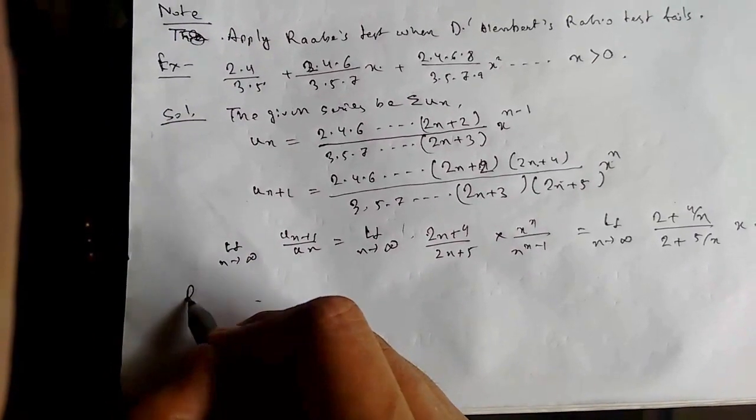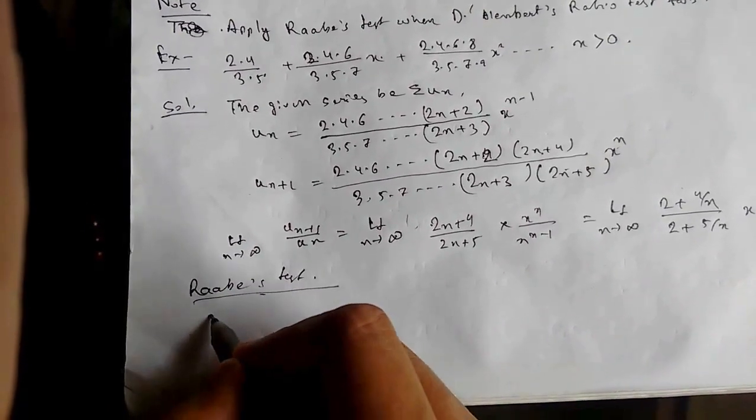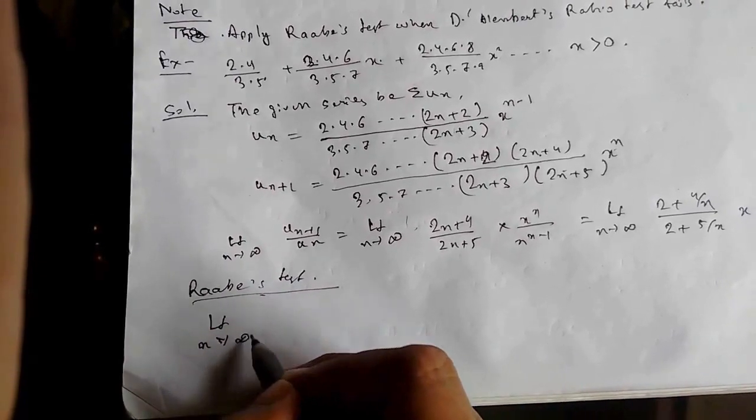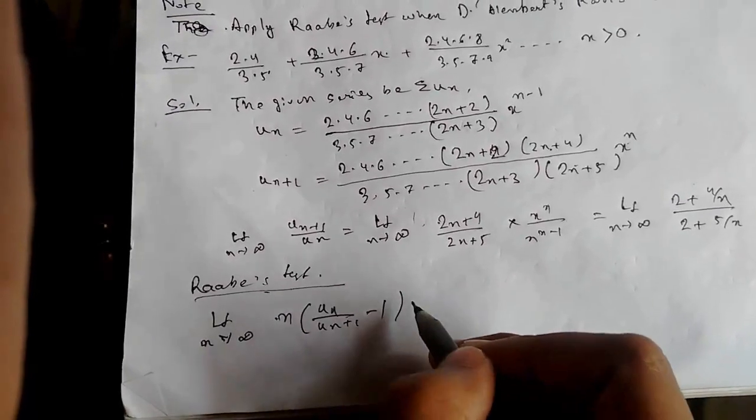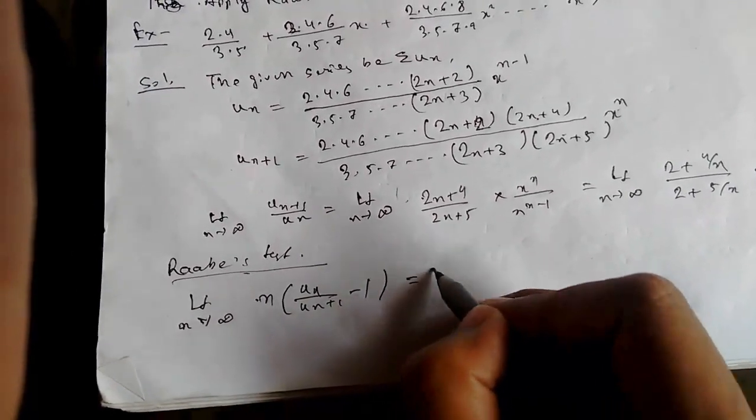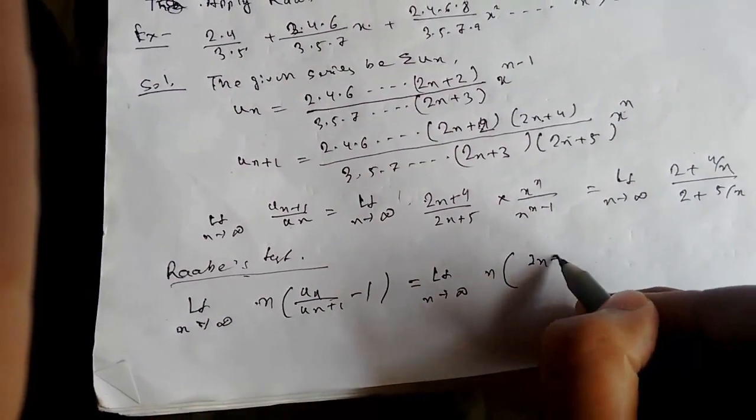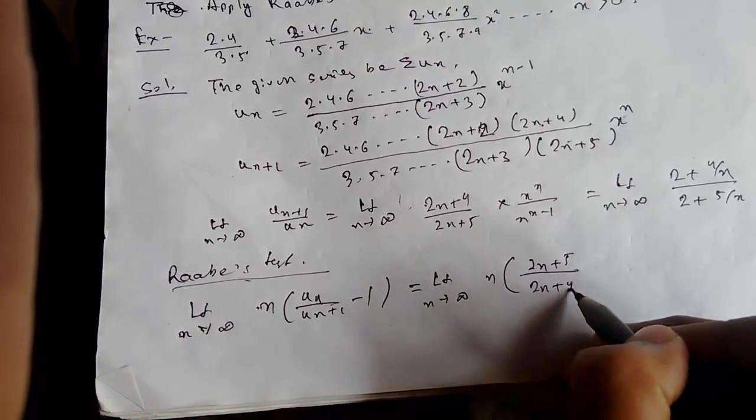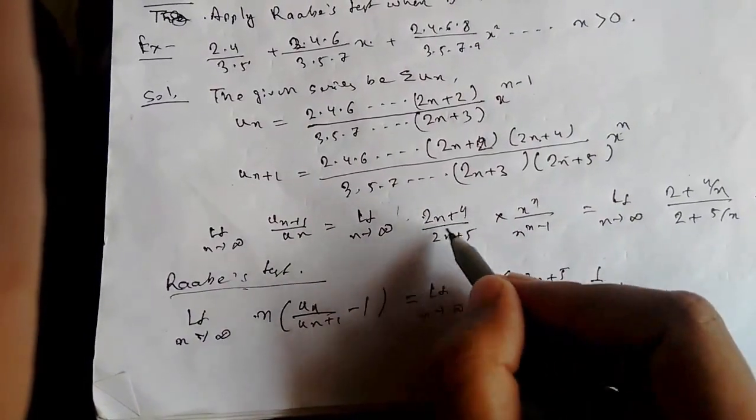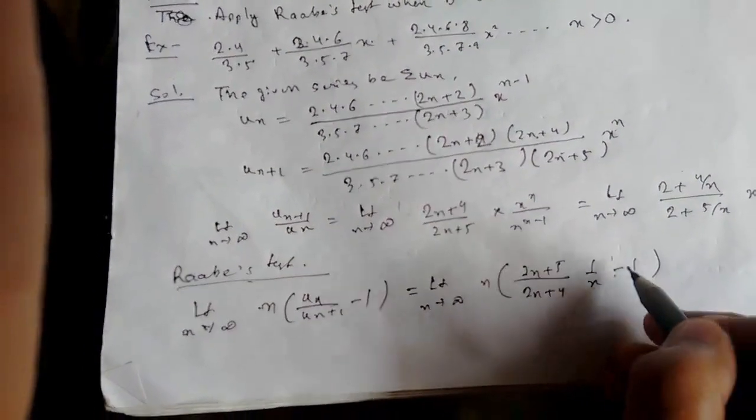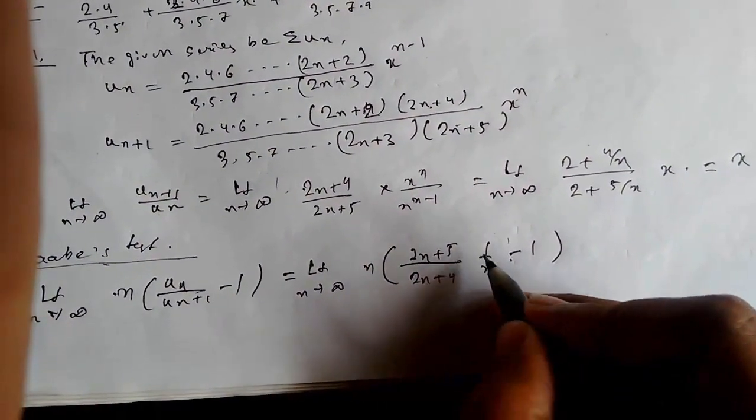Raabe's test: limit n tending to infinity, n times (UN/UN+1 - 1). So we need to solve this limiting value. This will be (2n+5)/(2n+4) times 1/x - 1. Now since x equals 1, this will go.